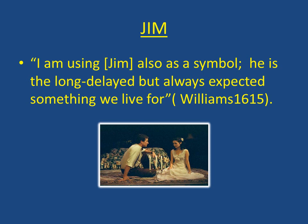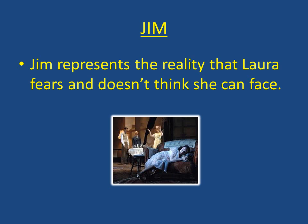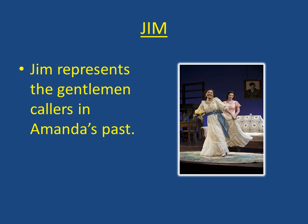Jim is also used as a symbol — he is the long-delayed but always expected something we live for. Tom acknowledged that Jim represents illusions of hope and happiness for both Amanda and Laura. Jim represents the reality that Laura fears and doesn't think she can face. Laura secretly admired Jim in high school and, because of her infirmity, felt that he could never return her admiration; now she is paralyzed in fear of him being in her home. Jim also represents the gentleman callers in Amanda's past and her youth — she retreats into her past happiness, remembering her seventeen suitors on Blue Mountain. With Jim as a caller, she is back in her girlhood dream world, wearing her frilly dress and giggling in delight.